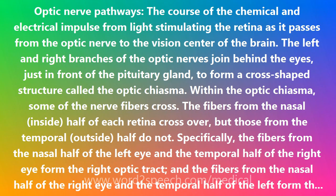Specifically, the fibers from the nasal half of the left eye and the temporal half of the right eye form the right optic tract. And the fibers from the nasal half of the right eye and the temporal half of the left form the left optic tract. The nerve fibers then continue along in the optic tracts.